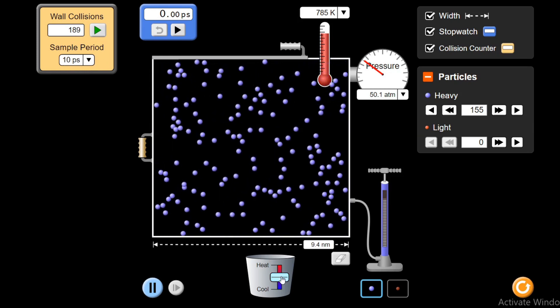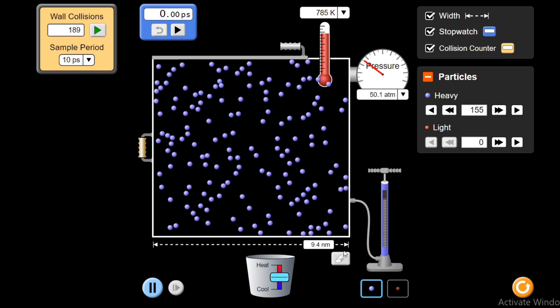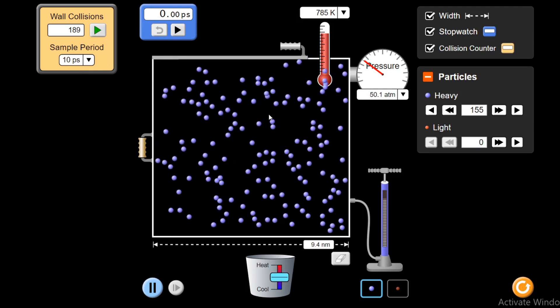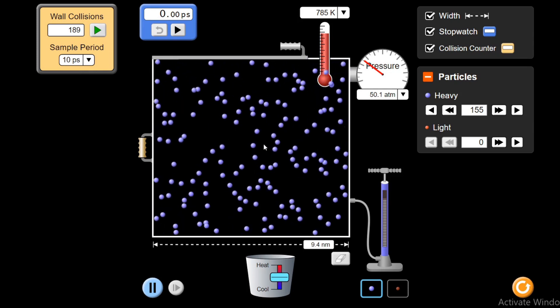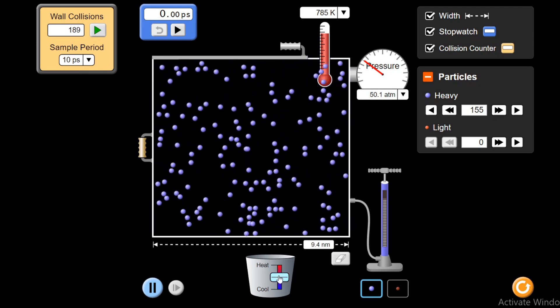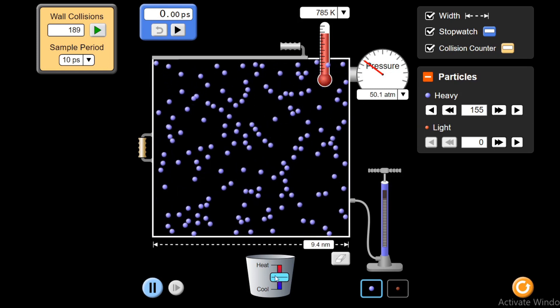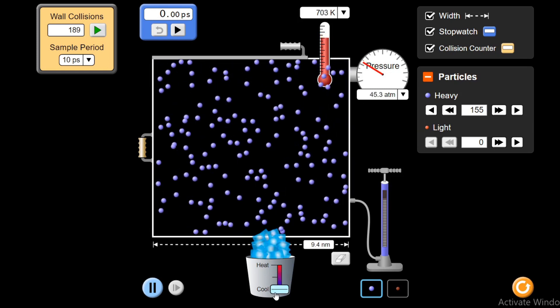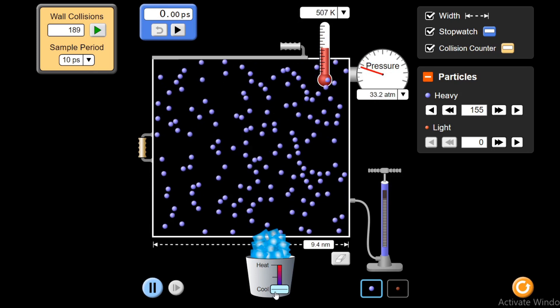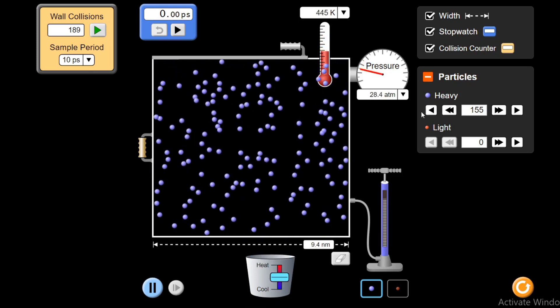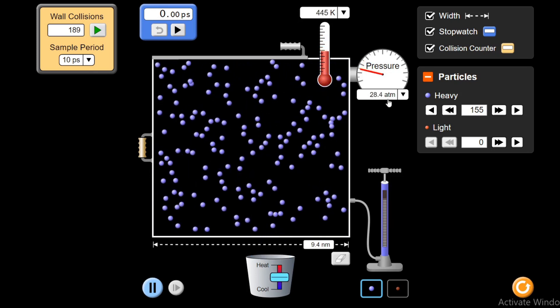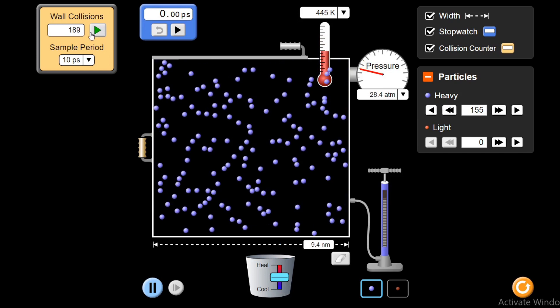And opposite will happen if I cool down the system or decrease the number of molecules. One way is by cooling down. Let's cool down the system and see it will reduce from 50 atm. Cool down the system, 40, 30. It has reached 28 atm.